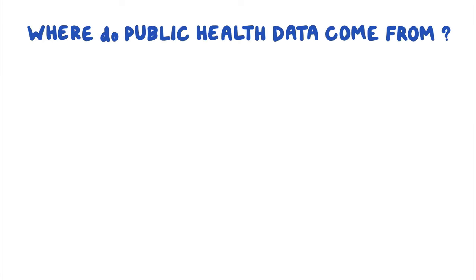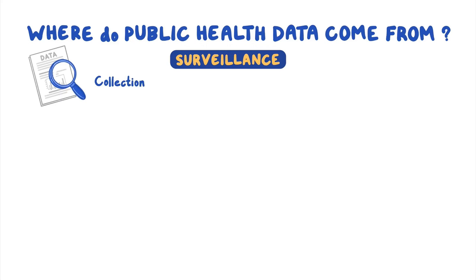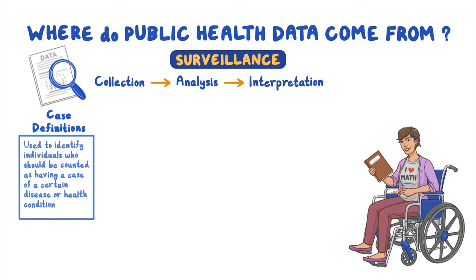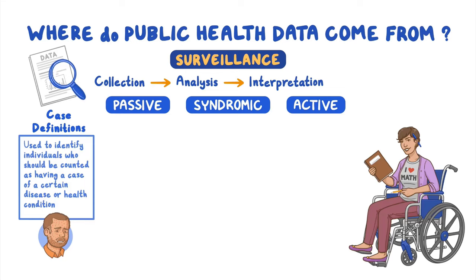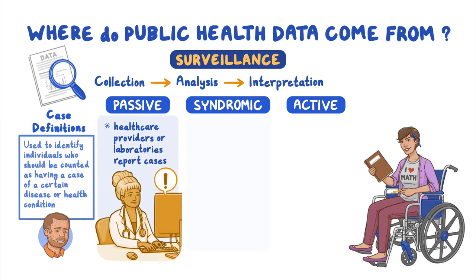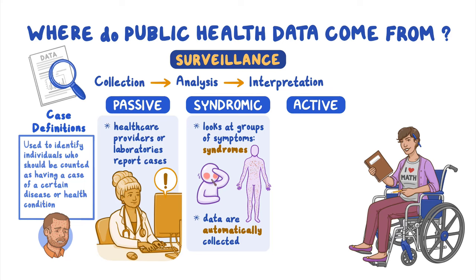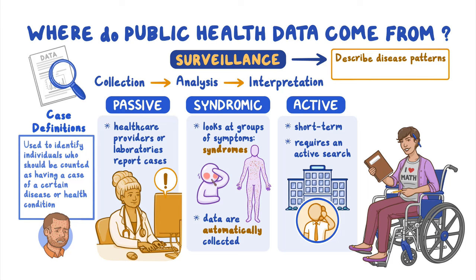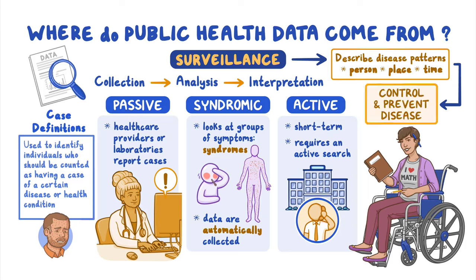As a quick recap, public health data come from surveillance — the ongoing systematic collection, analysis, and interpretation of data about health conditions in a specific population. Case definitions are used to identify individuals who should be counted as having a case of a certain disease or health condition. The three main types of public health surveillance include passive, syndromic, and active. In passive surveillance, the health department relies on healthcare providers or laboratories to report cases. Syndromic surveillance looks at syndromes or groups of signs and symptoms, and data are automatically collected. Active surveillance is usually short-term and requires public health experts to actively search for cases. Information from surveillance helps public health experts describe disease patterns with respect to person, place, and time, and can be used to create strategies to control disease and prevent future health problems.